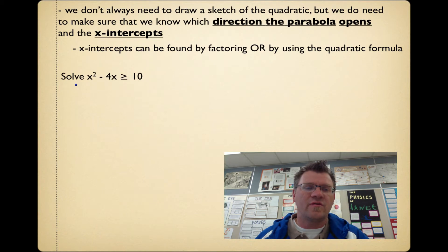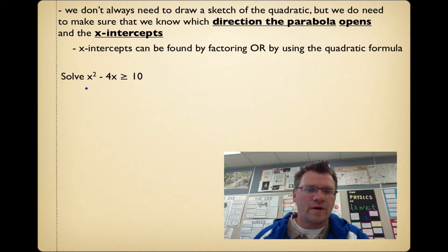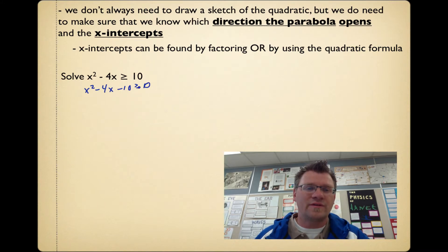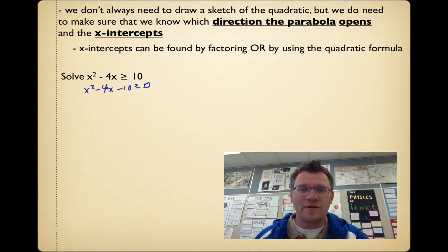Our next example: solve x squared minus 4x, where it is greater than or equal to 10. On a graph, that means where is it going to be above the x-axis. We need to move everything to one side. When we try to factor, two things that multiply to negative 10 but add to negative 4 — that's not going to work, so we'll use the quadratic formula.